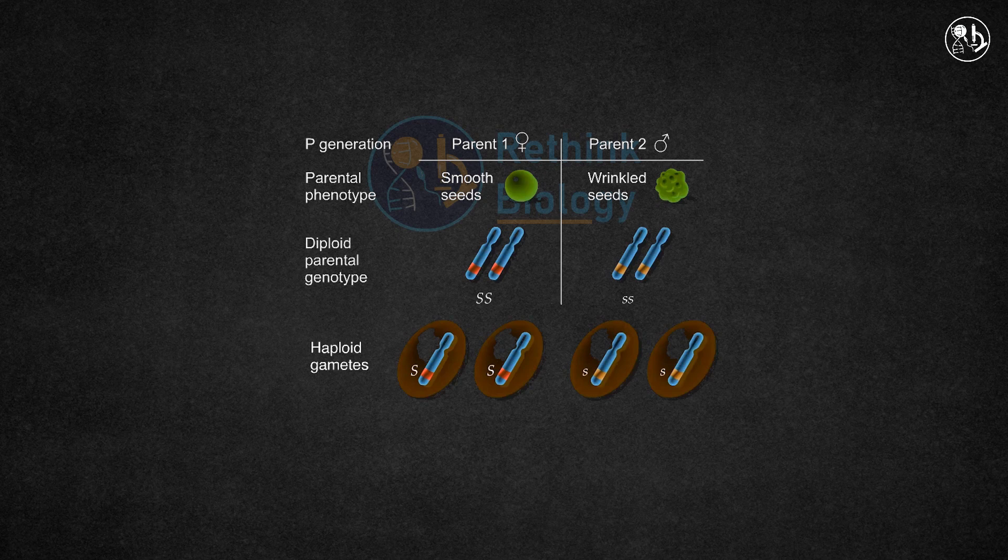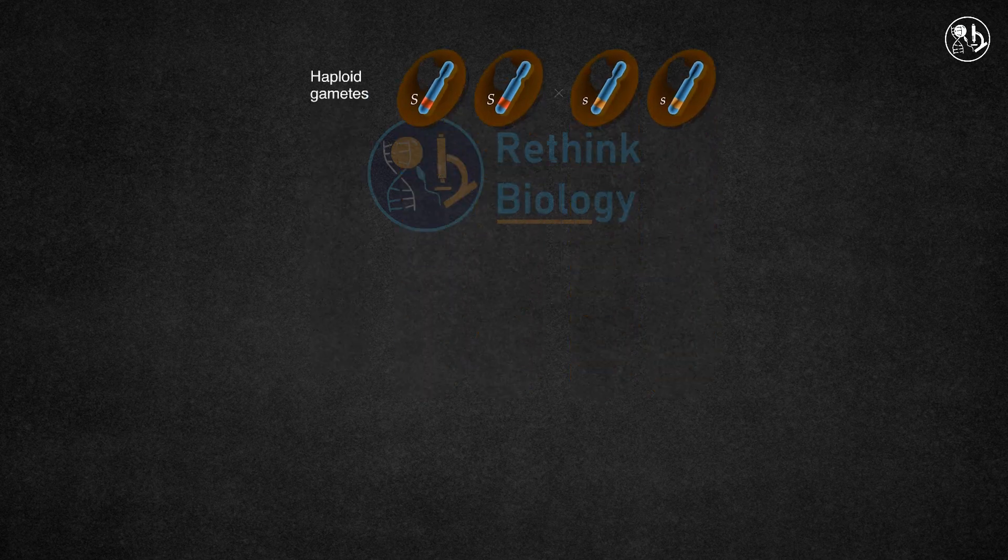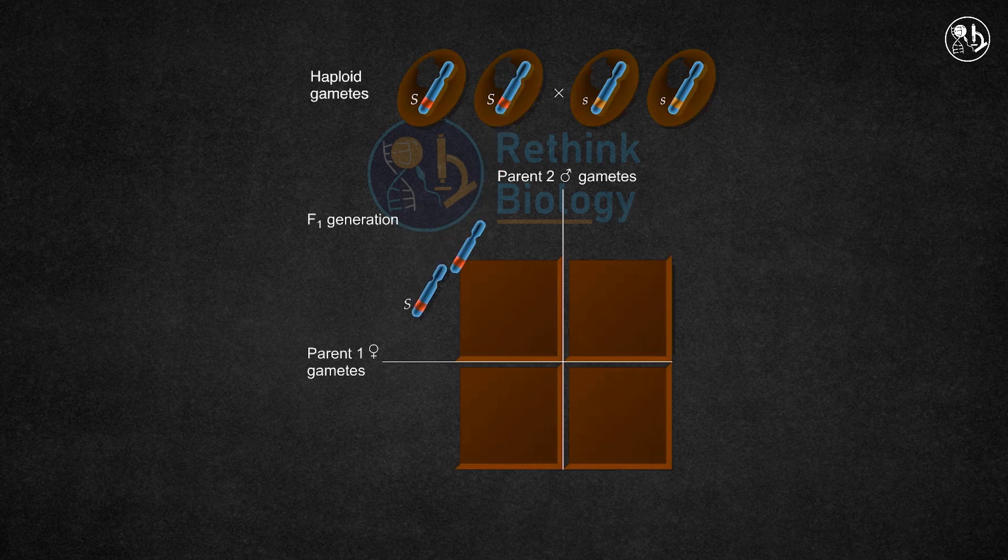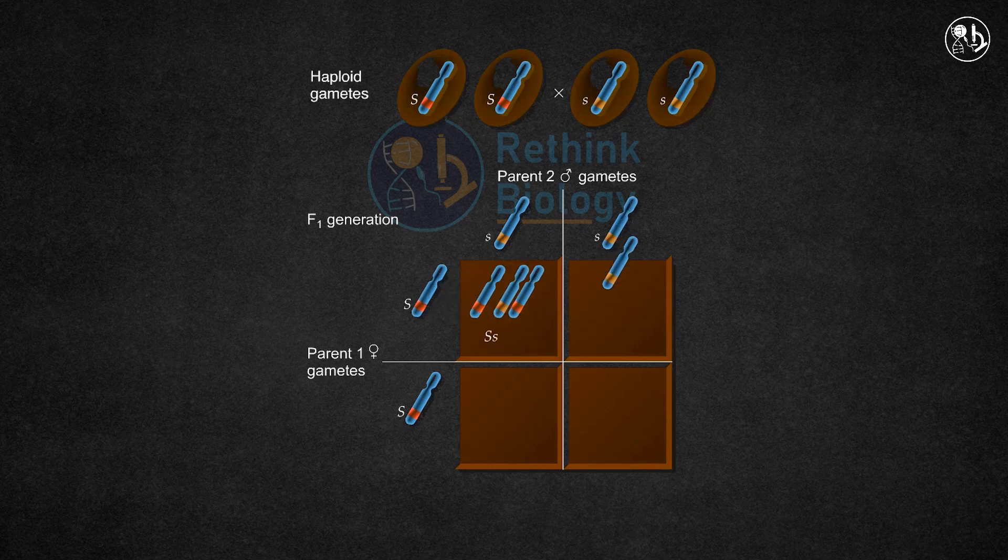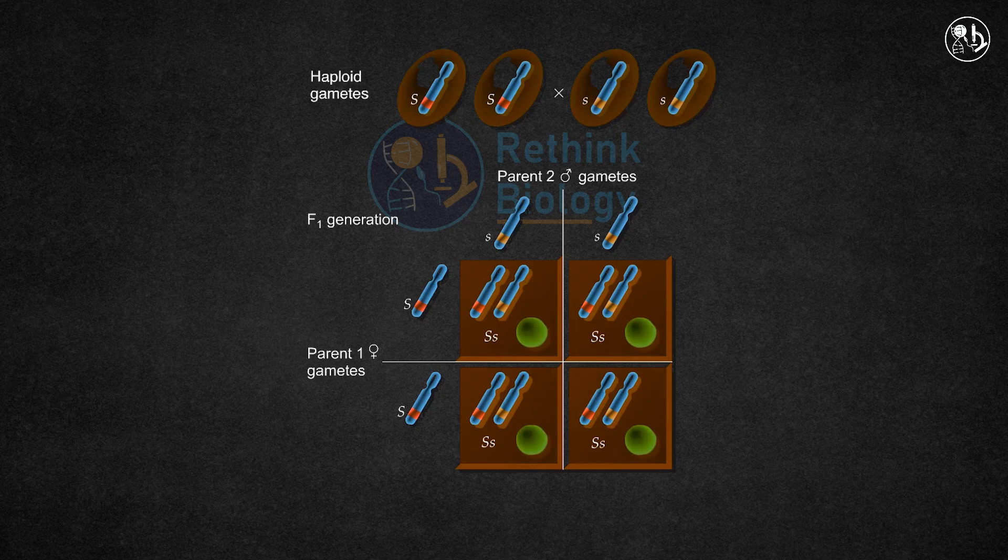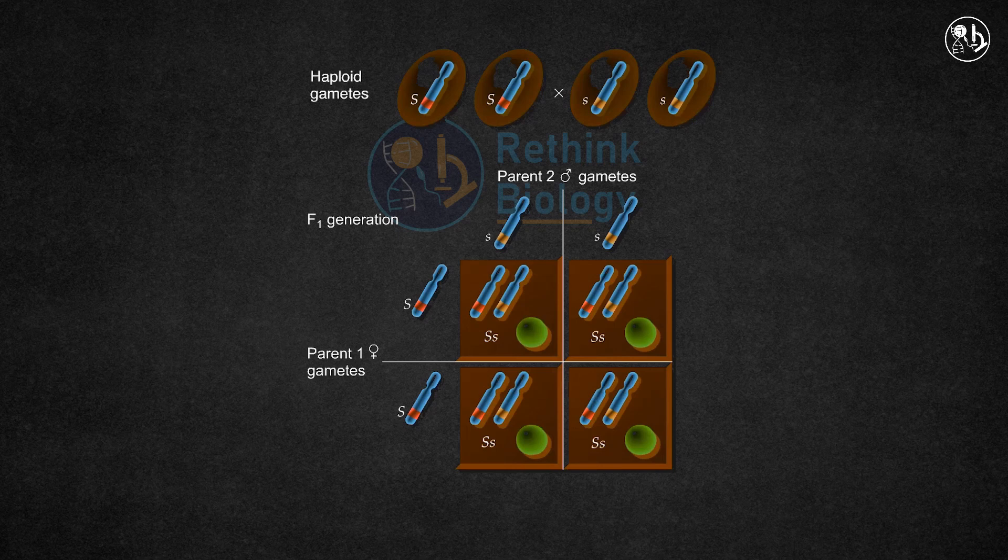In a monohybrid cross, the parental true breeding plants produce sex cells or gametes of each type. When the gametes unite, the resulting F1 generation has both types of factors and one of them is dominant over the other, which is recessive. In this case, the smooth seed trait is dominant over the wrinkled seed trait.